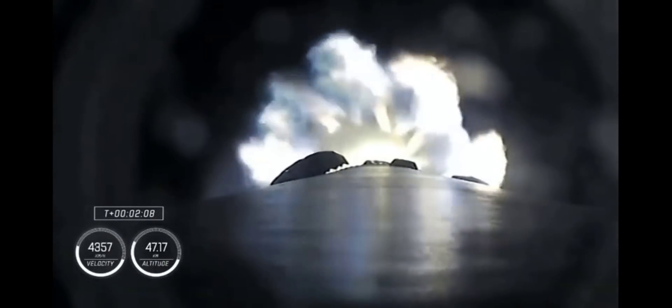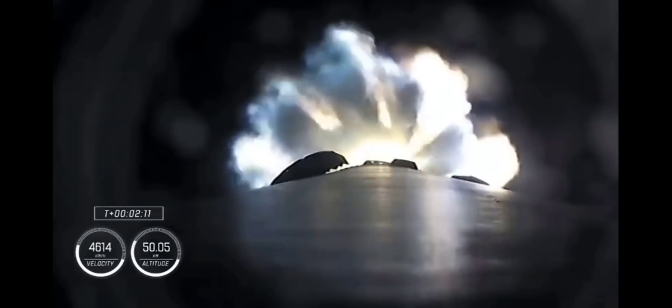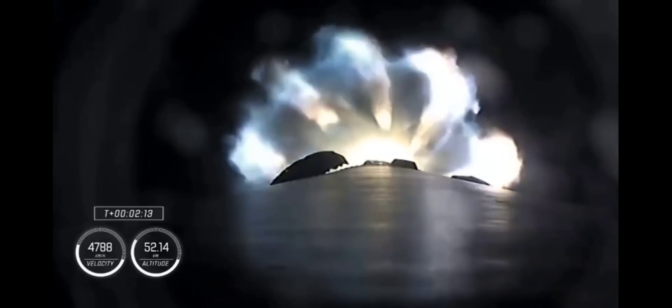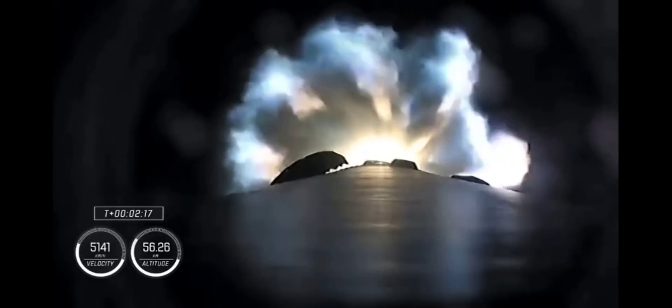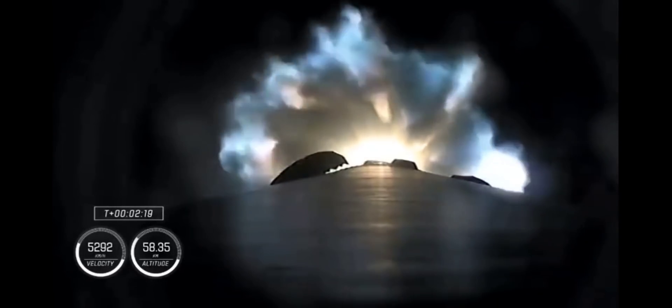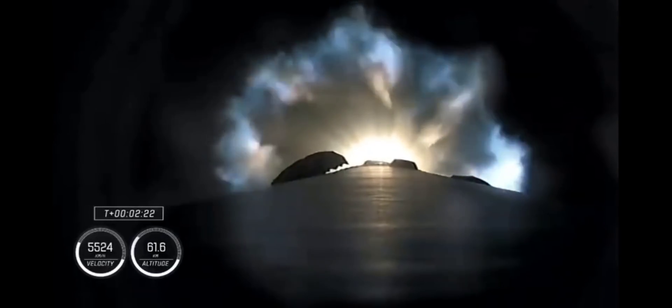We're a half a minute away from three quick events in rapid succession. We're going to get main engine cutoff. The nine Merlin engines will throttle down and then shut down. We're going to get stage separation. Stage 1 throttle down. And then ignition of the second stage engine.